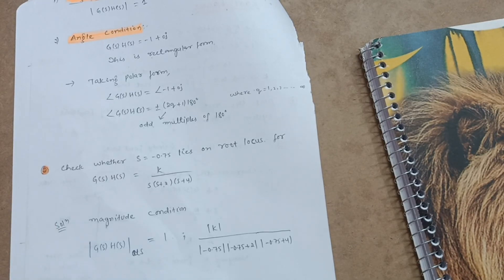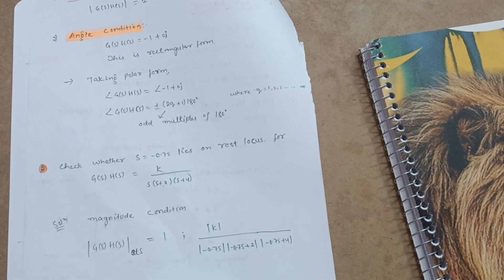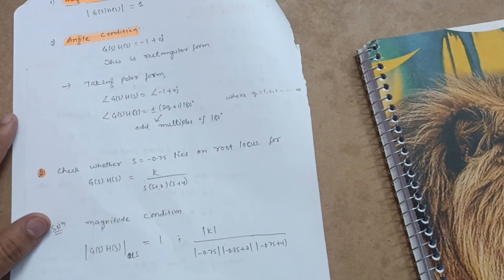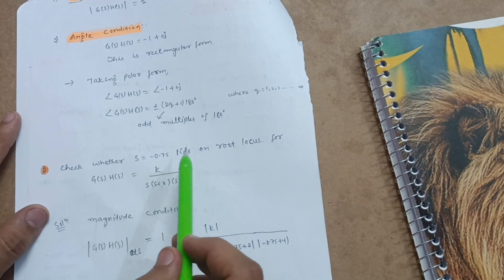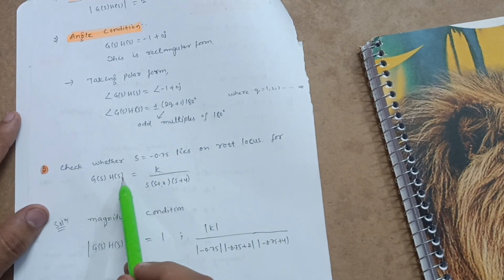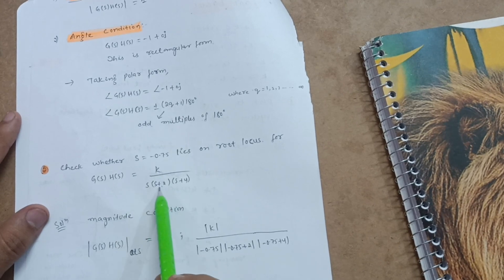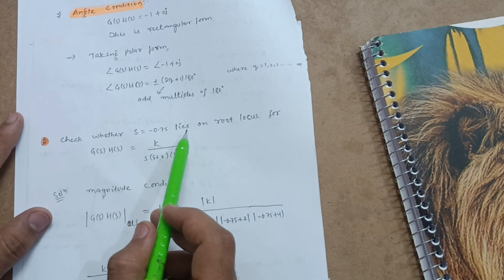Welcome dear friends. Today we will discuss another problem on root locus. If you have not watched the previous video, which is the basic video on root locus, go through it so that you will have a clear understanding. The problem is: check whether s = -0.75 lies on the root locus for G(s)H(s) = k / [s(s+2)(s+4)].